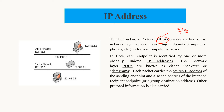Each endpoint is identified by one or more globally unique IP addresses. The network layer PDUs are known as either packets or datagrams. The data that is sent from the upper layer of the TCP/IP model or OSI model — those data streams are called packets or datagrams. Each packet carries the source IP address of the sending endpoint and the address of the intended recipient endpoint. Other protocol information is also carried. If you want to send something from A to B, that packet of information will contain the data to be sent.